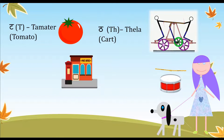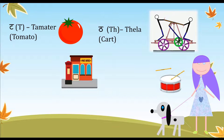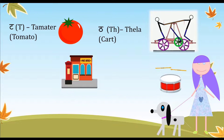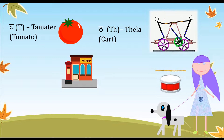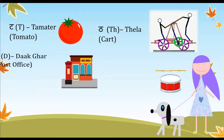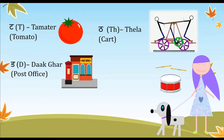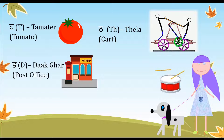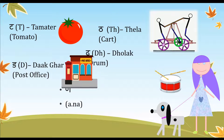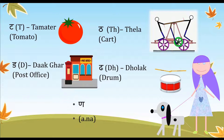Continuing with 'ta' — 'tamatar' which is tomato; 'tha' — 'thela' which is a cart being pushed; then we have 'da' — 'dakghar' which means post office; and 'dha' — 'dholak' which is a drum.